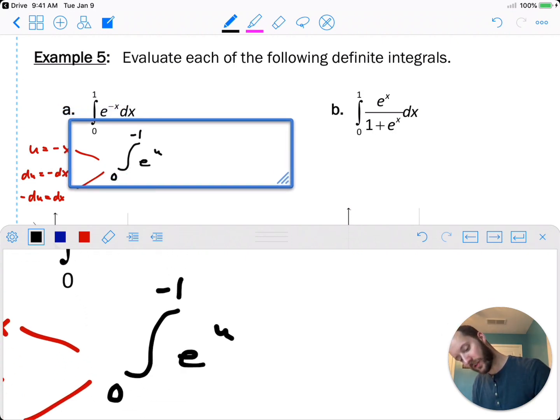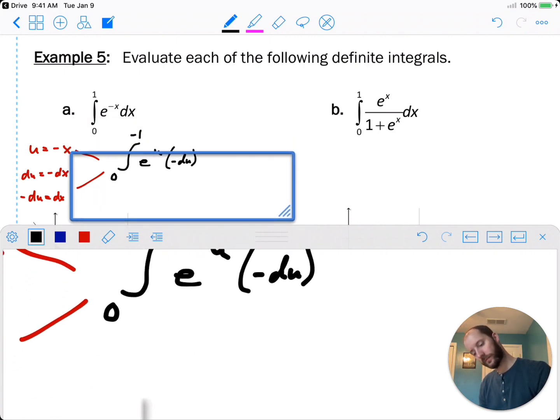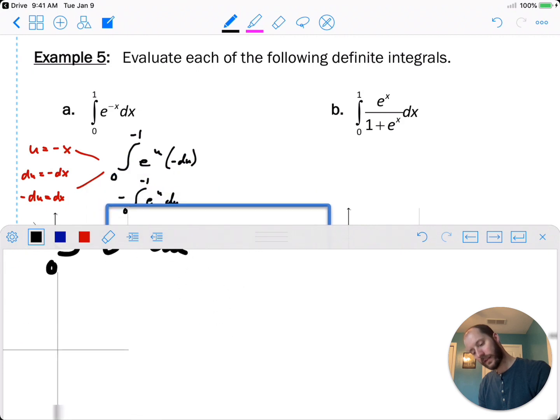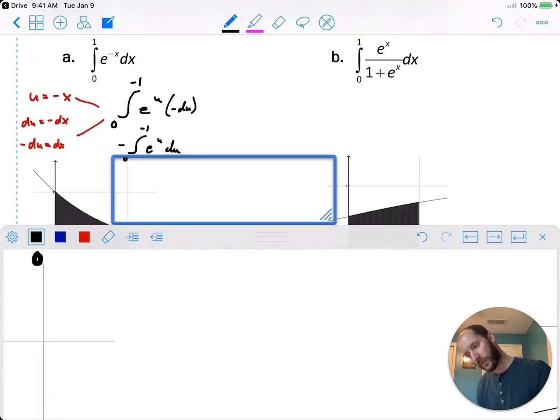So e to the u. And negative du. So let's pull that negative out. And go ahead and evaluate. So negative e to the u. From 0 to negative 1.